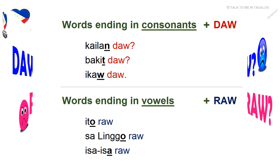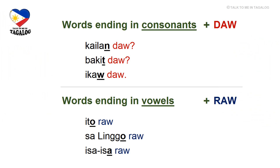Here's a simple explanation: use daw if the preceding word ends with a consonant. For example, the word kailan meaning 'when' — kailan ends with n, so we use daw: kailan daw. Another example is bakit, which means 'why' — bakit ends with t, so we use daw: bakit daw. And then we have ikaw, meaning 'you' — ikaw ends with w, so we add daw: ikaw daw.